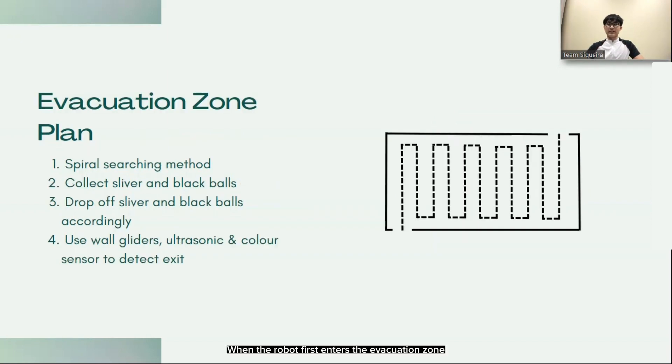When the robot first enters the evacuation zone without knowing which side is the evacuation point and which side is the exit zone, it checks for a corner by using the motor stall check and then starts using a spiral searching method to pick up silver balls and black balls accordingly.